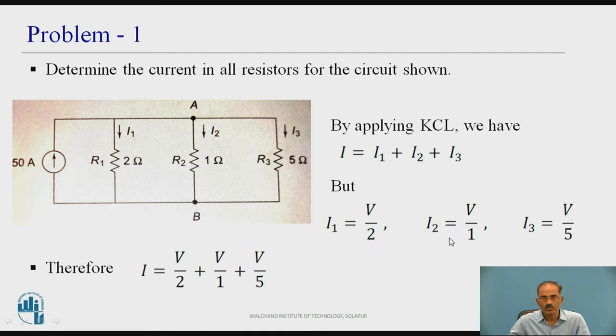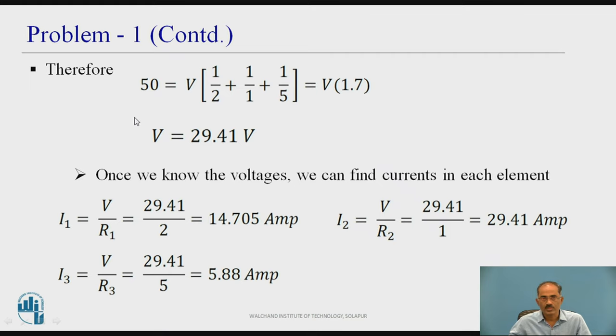Similarly, I2 equal to V by R2, that is R2 is equal to 1 ohm. Similarly, I3 equal to V by R3, R3 equal to 5 ohm. If I substitute I1, I2, I3 in the I equation, therefore, I becomes equal to V by 2 plus V by 1 plus V by 5. Therefore, I which is given is 50 ampere, which is equal to V, you need to take common V into 1 by 2 plus 1 by 1 plus 1 by 5. So, this is equal to V into 1.7.